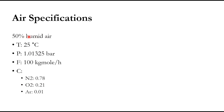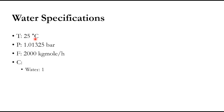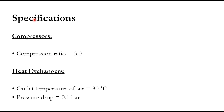The air specifications are: 50% humid air entering at 25°C, 1.01325 bar (1 atm), flow rate of 100 kg-mol/hr. The original dry air molar composition is nitrogen 0.78, oxygen 0.21, argon 0.01. Water specification is 25°C, 1 atm, 2000 kg-mol/hr, with composition 1 for water. Both compressors have a compression ratio of 3, as the compression ratio is kept the same for all stages.